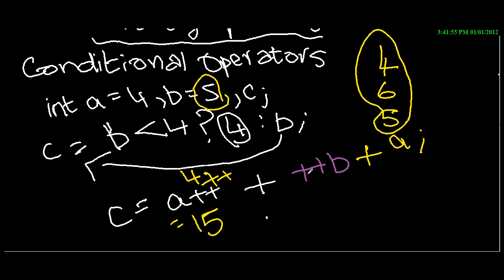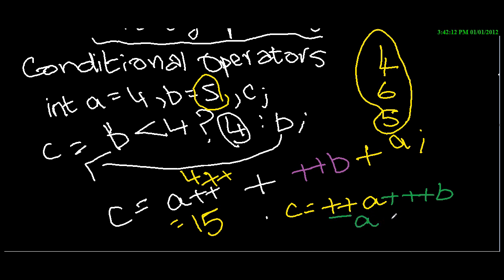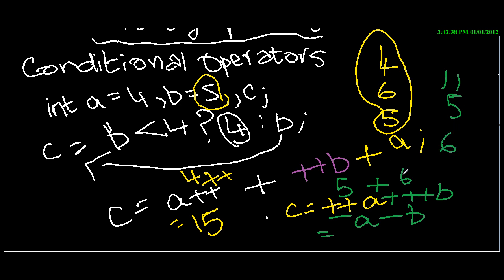The last sum: c equals prefix plus-plus a, plus prefix plus-plus b, minus a, minus b. a is 4, so prefix plus-plus a becomes 5. b is 5, so prefix plus-plus b becomes 6. So we have 5 plus 6 equals 11. Then 11 minus a — the value of a is now 5 — gives 6. Then 6 minus b — the value of b is now 6 — gives 0. So c evaluates to 0.